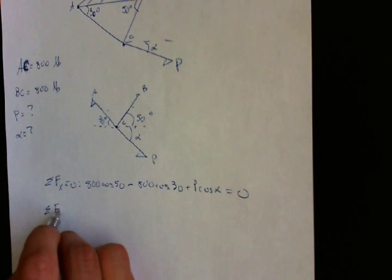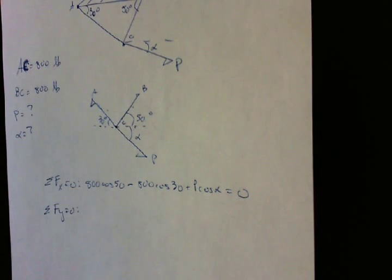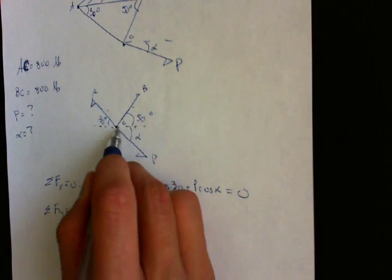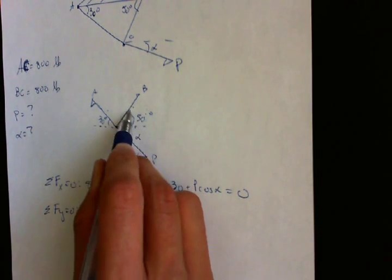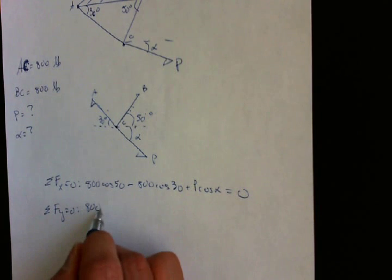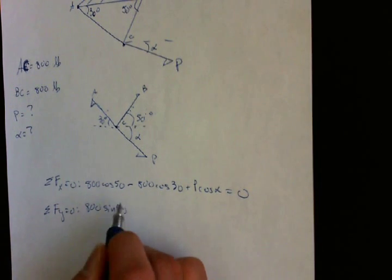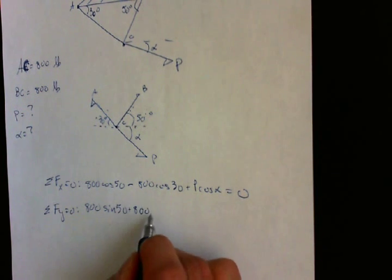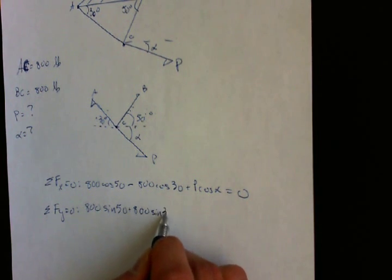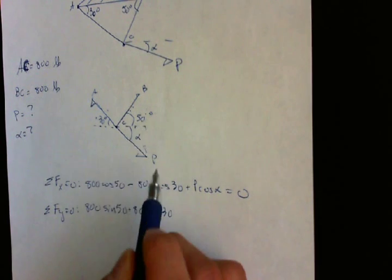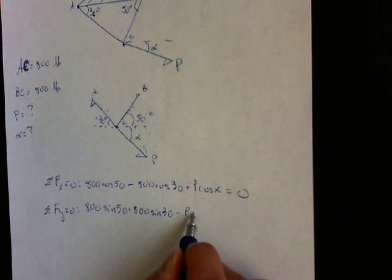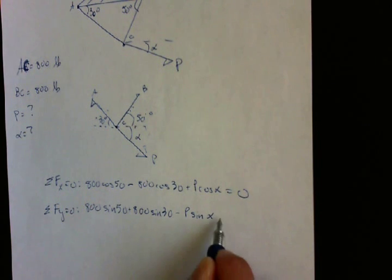Now sum of forces in the Y equals zero. So it's this one. So it's opposite over hypotenuse. So 800 sine 50 plus this one plus 800 sine 30 minus this. So minus P sine alpha equals zero.